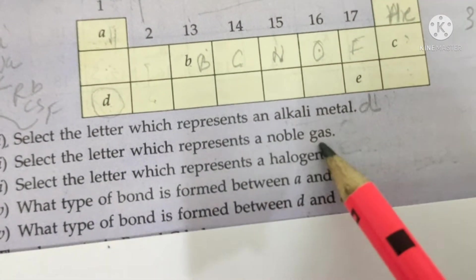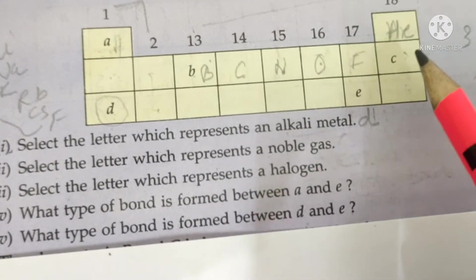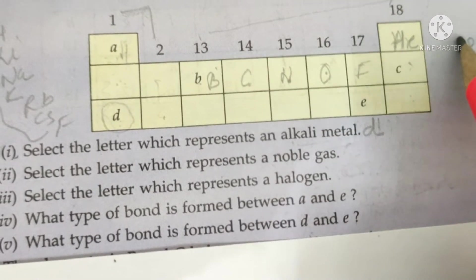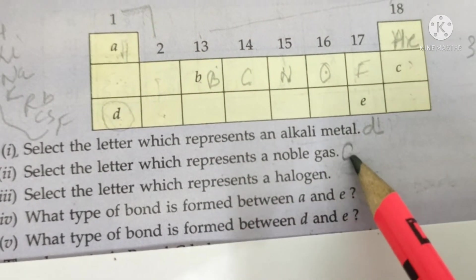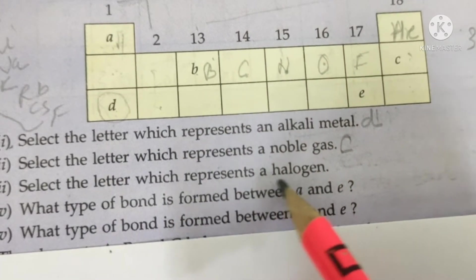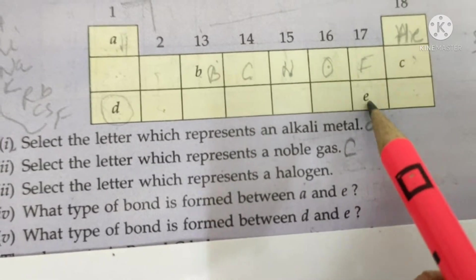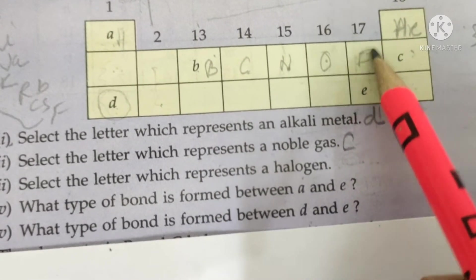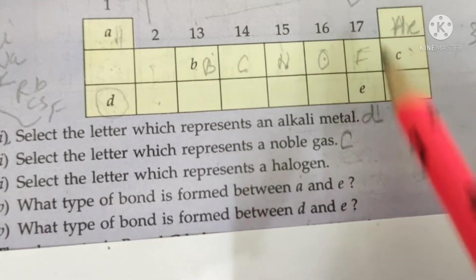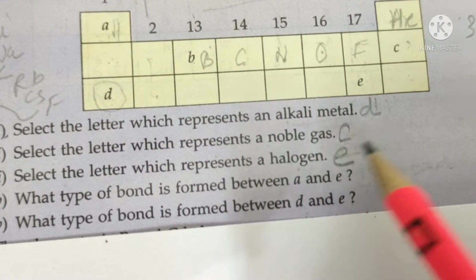Select the letter which represents the noble gases. So noble gases, you know that noble gases are those whose octet is filled, which come at the end. So the answer is C. Next. Select the letter which represents the halogen. Halogens are those which form salt - chlorine, bromine, iodine. So which ones? 17. So answer is E. Next.